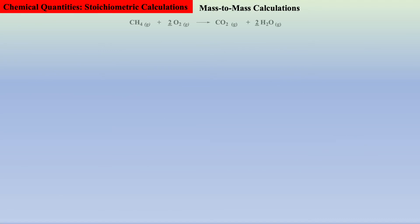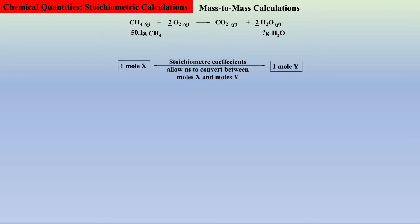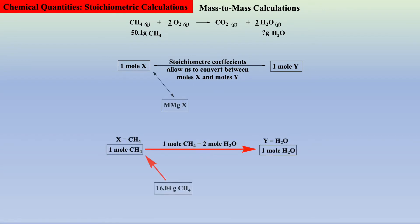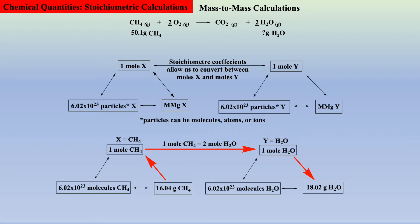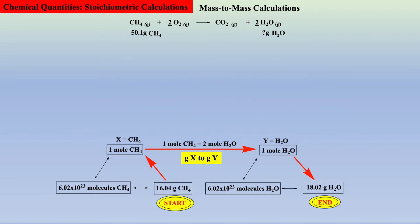Now let's take it a step further: given 50.1 grams of methane, how many grams of water are formed? In the previous examples, we learned we can go from moles of x to moles of y employing the stoichiometric coefficients of the balanced equation. In this example, we will convert moles methane to moles water. So the plan is: convert grams of methane to moles methane, then to moles water, then to grams water. This is the same as connecting two triangles together — a start and stop point for grams of x to grams of y for any stoichiometric exercise.